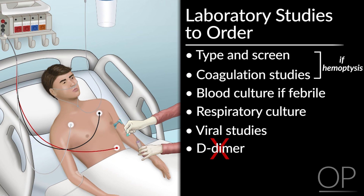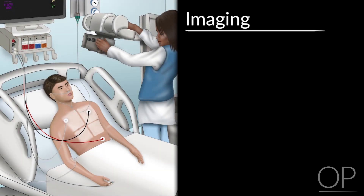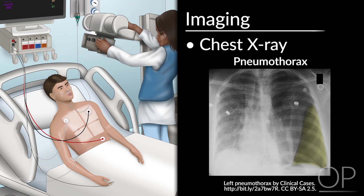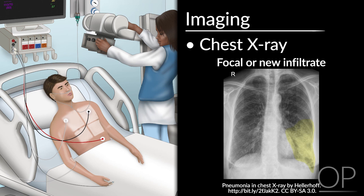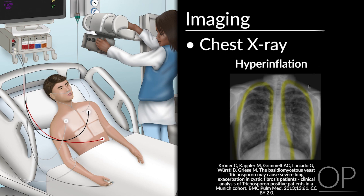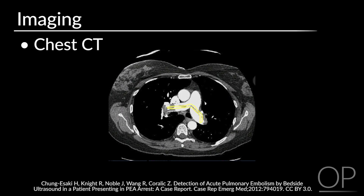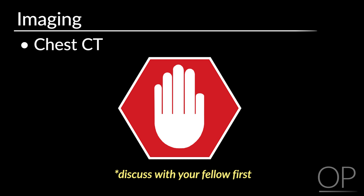Consider viral studies such as influenza if these have not already been sent. A D-dimer is unlikely to be helpful as it is often high in the setting of a CF exacerbation. Certainly do not send this unless you are planning to obtain a chest CT scan if the D-dimer is elevated. For imaging, it is best to start with a chest X-ray to evaluate for a pneumothorax, a focal or new infiltrate, a pleural effusion, and to assess the degree of hyperinflation. If the patient is severely tachycardic or you are clinically concerned for a pulmonary embolism, consider an EKG to evaluate for right heart strain. Consider a chest CT as well if concerned for a pulmonary embolism, but discuss this with the fellow first.